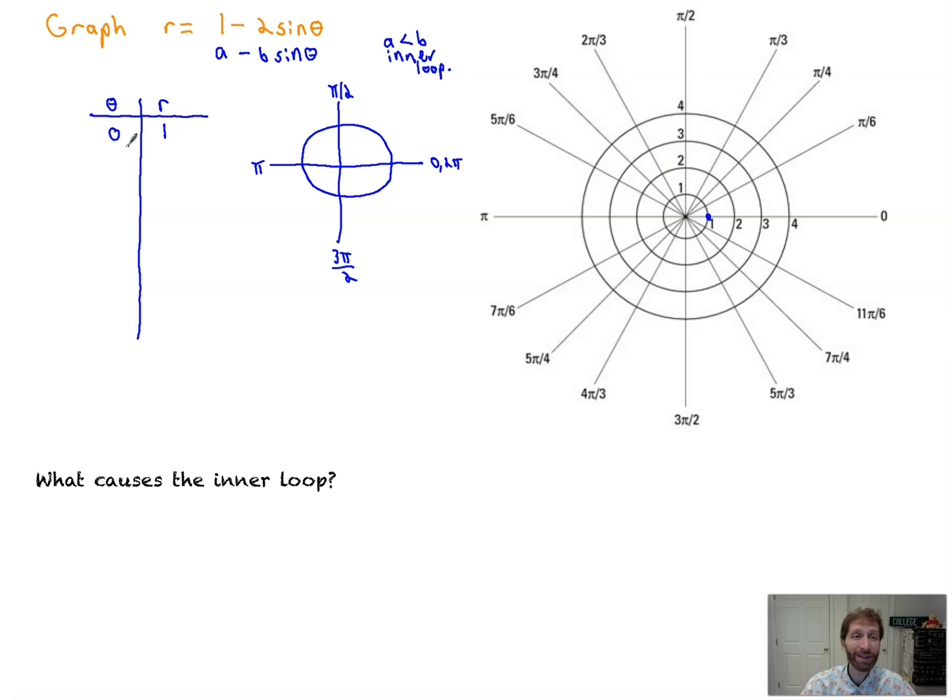Looking at this, let's pick theta equals 0. 2 times sine of 0 is 0. 1 minus that is 1. So we've got the point angle of 0 out to 1. The next value I'm going to choose, a nice sine value, would be like pi over 6. That's because sine of pi over 6 is 1 half. Times 2, that's going to be 1. 1 minus 1 is 0. So at pi over 6, we're back here to 0. Interesting. We've kind of looped back in like so.